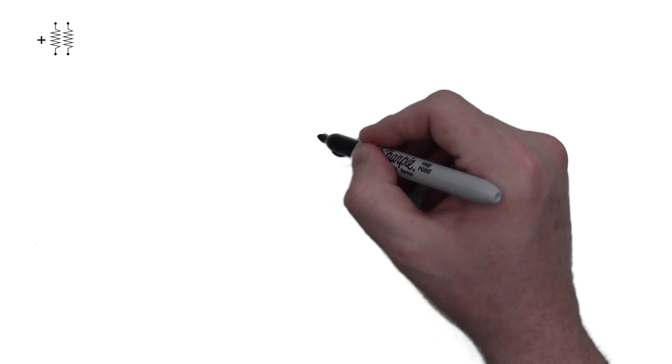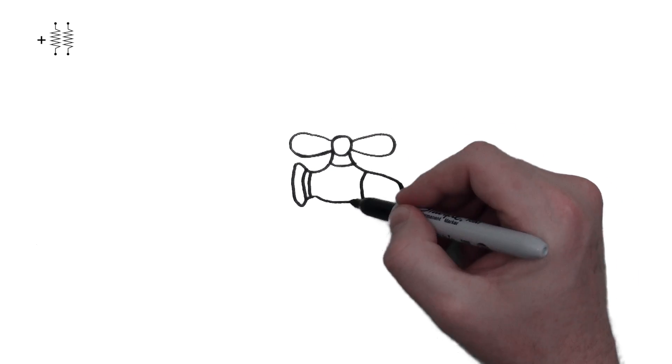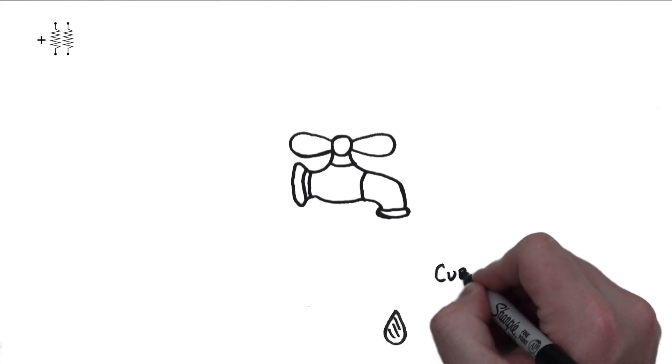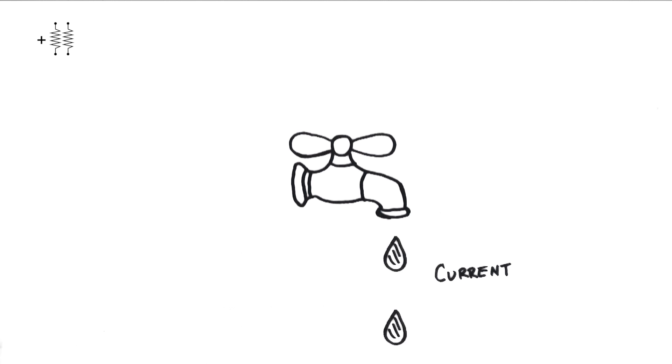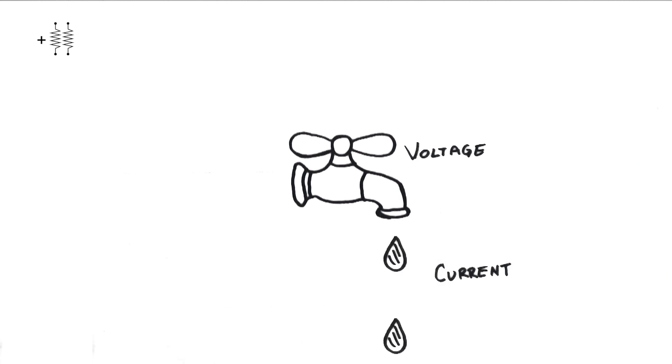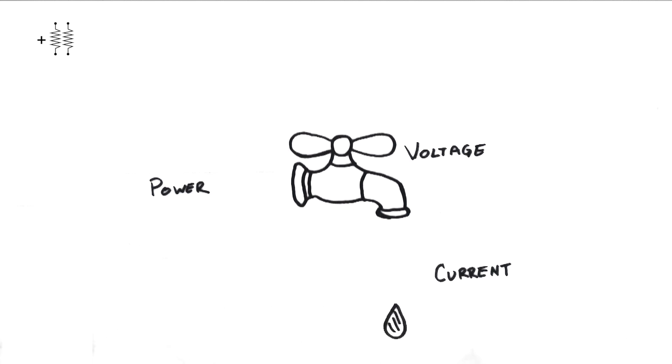A common analogy that is often used to describe electricity is water. Now, I'm not a big fan of that, and here's why. The water coming out of the faucet can be thought of as electrons, I guess. And so the current would be the drops flowing through the faucet. And then that would mean that the voltage is how wide the valve is opened up. And then somehow power has to work into this, right? Well, after this video, I think you'll understand how this analogy just doesn't hold water.